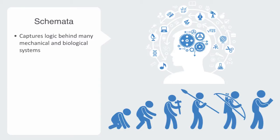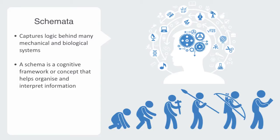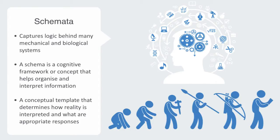The word schema comes from the Greek word meaning to shape, or more generally, plan. A schema is a cognitive framework or concept that helps organize and interpret information. As such, it is a conceptual template that determines how reality is interpreted, and from this, what are appropriate responses to given stimuli.